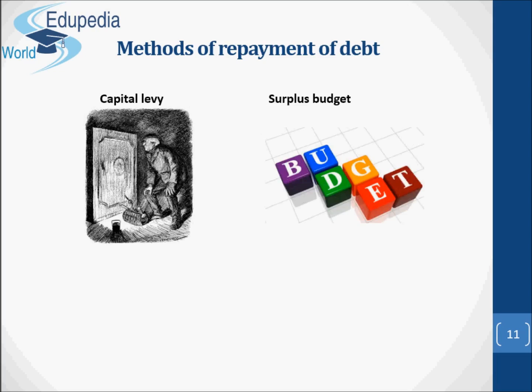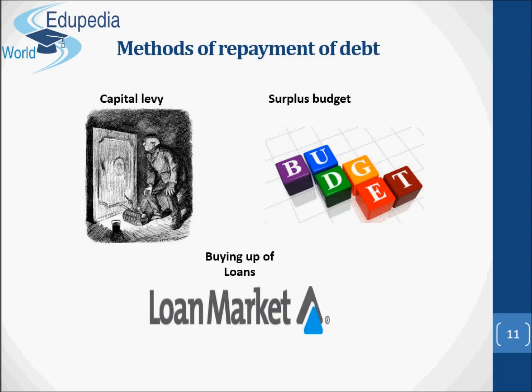As for the surplus budget, quite often a surplus budget may be used to clear public debt, but in recent times due to ever increasing public expenditure, a surplus budget is a rare phenomenon. Finally, the buying up of loans — the government redeems debt through buying up loans from the market.